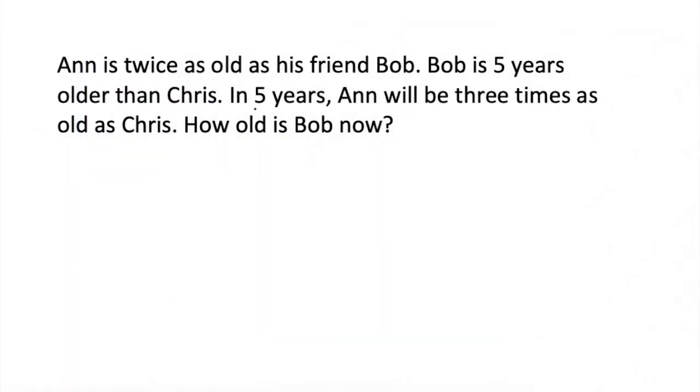Ann is twice as old as his friend Bob. Bob is five years older than Chris. In five years, Ann will be three times as old as Chris. How old is Bob now? So, for our table, we will have in five years or positive five and now or ang present age.